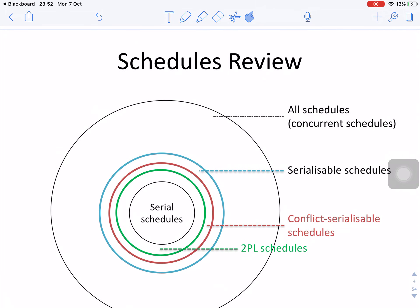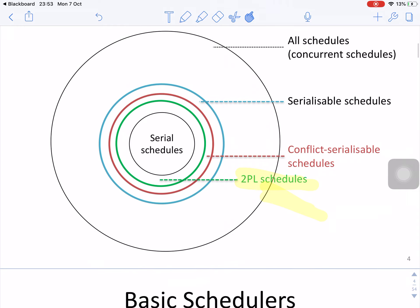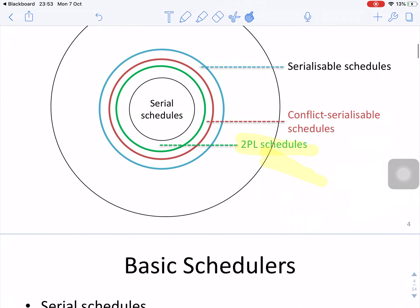The schedule hierarchy shows that all concurrent schedules contain serializable schedules, which contain conflict serializable schedules, which contain two-phase lock schedules. Two-phase schedules are a stricter concept compared with conflict serializable schedules, which is why they always guarantee conflict serializability.